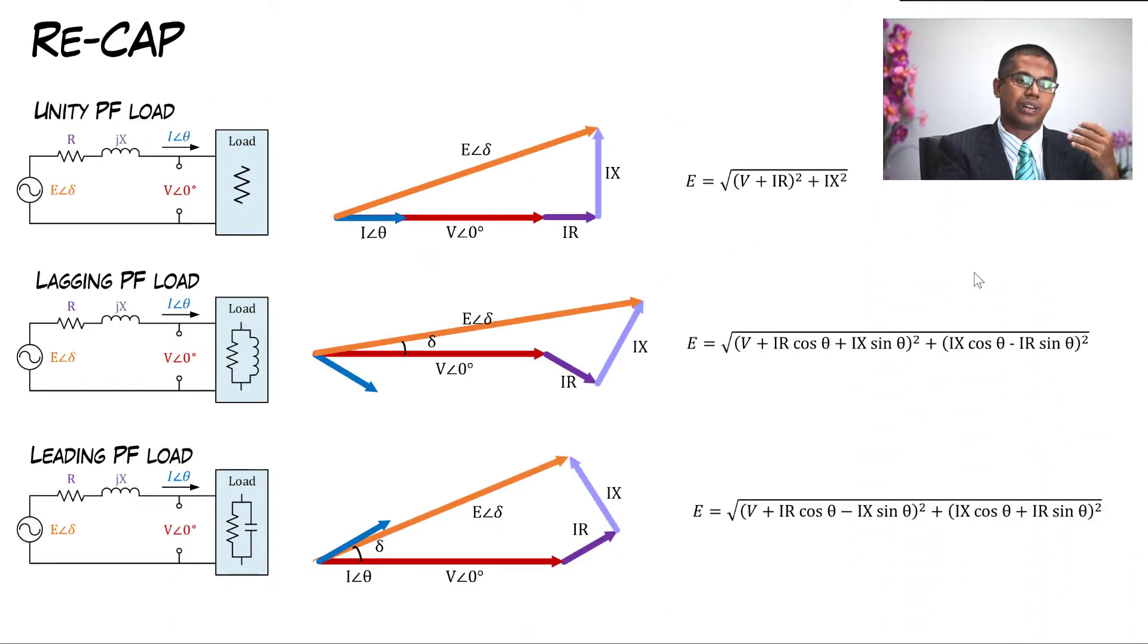So we recap: there's unity power factor, lagging power factor, and leading power factor, and this is the phasor diagram in each case. And then we got our equation of E. For the next part, we will learn how to use this equation in calculating voltage regulation, where it is a very important topic in transformers and in synchronous generators. See you on the next video.